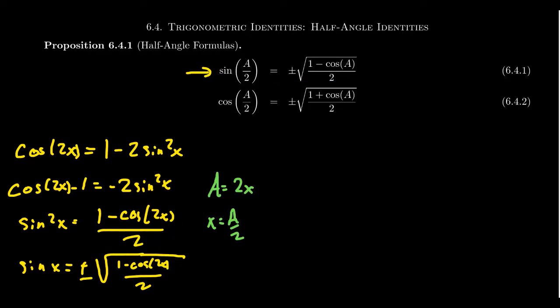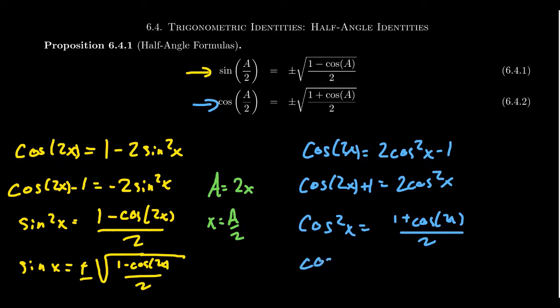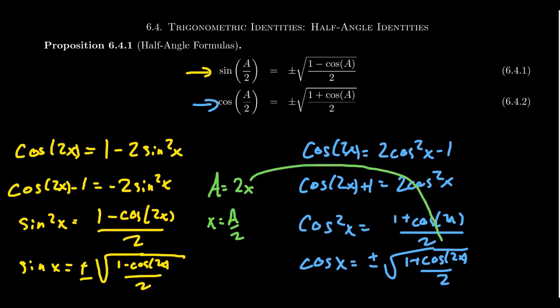The same basic calculation works for cosine. We take the double-angle identity cosine of 2x equals 2 cosine squared x minus 1, and solve for cosine of x. Add 1 to both sides: cosine of 2x plus 1 equals 2 cosine squared x. Divide by 2: cosine squared x equals (1 plus cosine 2x) over 2. Take the square root: cosine of x equals plus or minus the square root of (1 plus cosine 2x) over 2. Using the substitution a equals 2x and x equals a over 2 gives us the cosine half-angle identity.